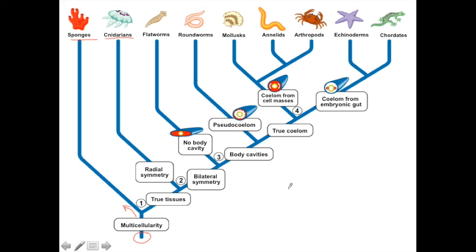This is a way you can look at the basic development of multicellular animals, and this has held up very well when it comes to molecular data as well. These four things are listed because they happen to be the most fundamental aspects of what makes us as animals.